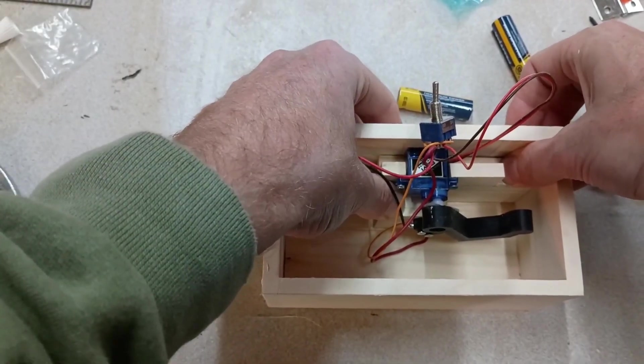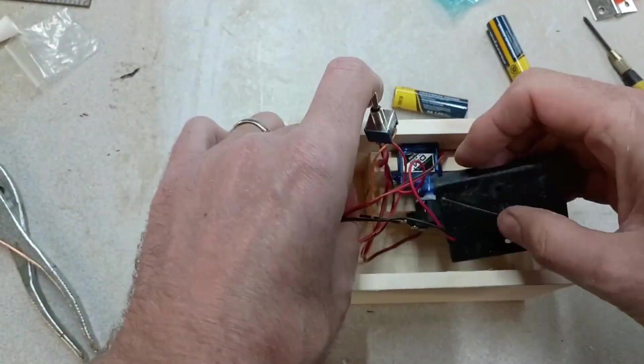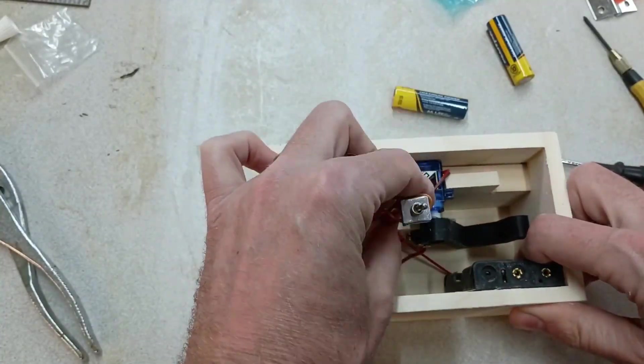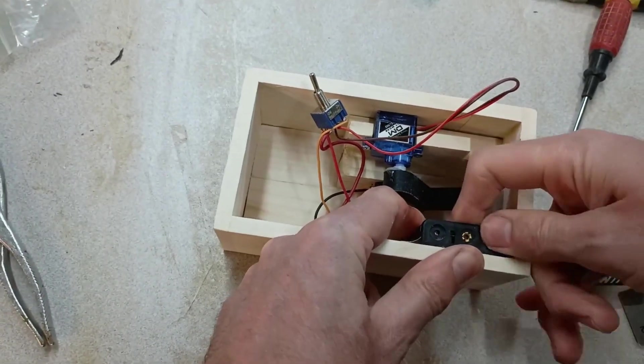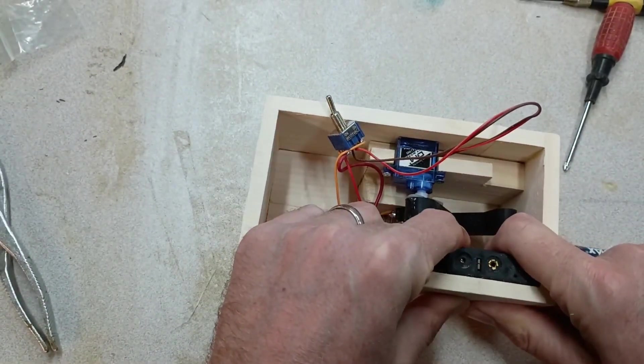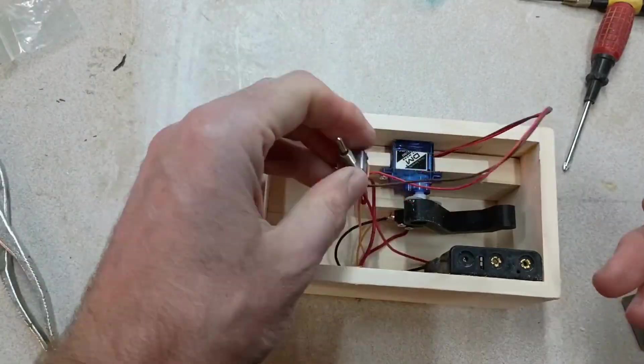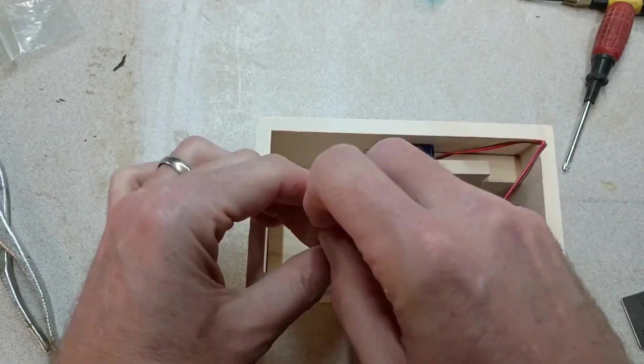Use some super glue to attach that whole apparatus into the box. And similarly use some super glue to attach the battery pack. I put the battery pack on the right because then, as you'll see, that makes it easier to get to the batteries when the hinged side of the top is open.